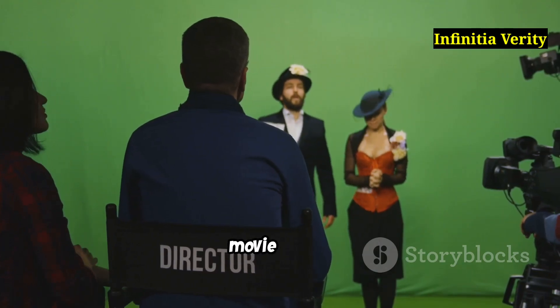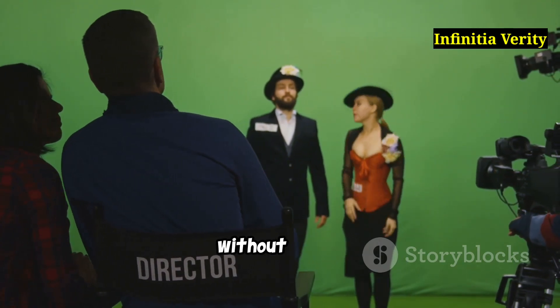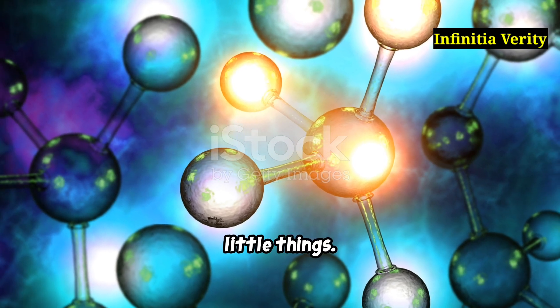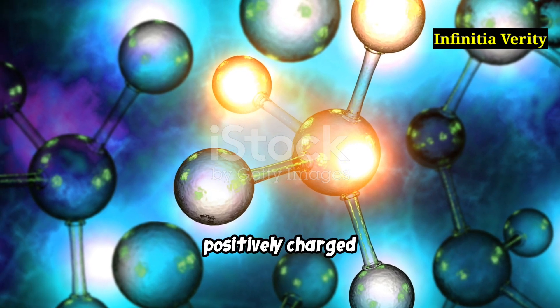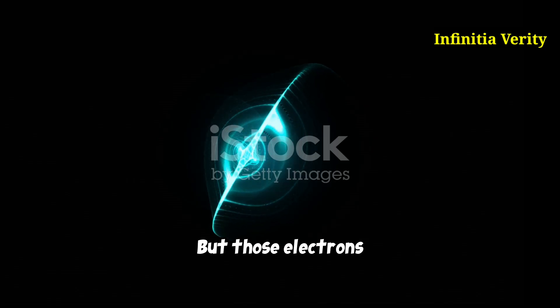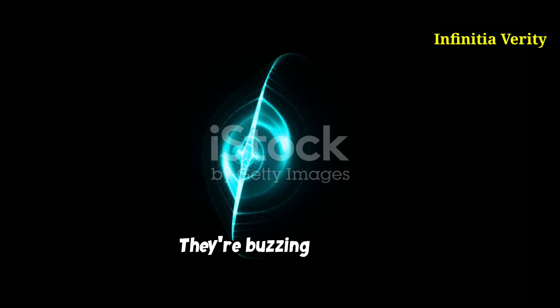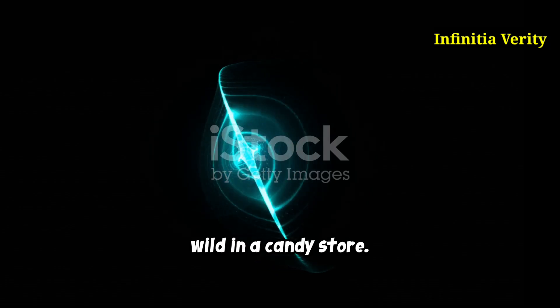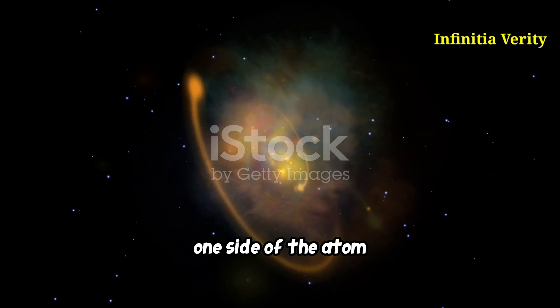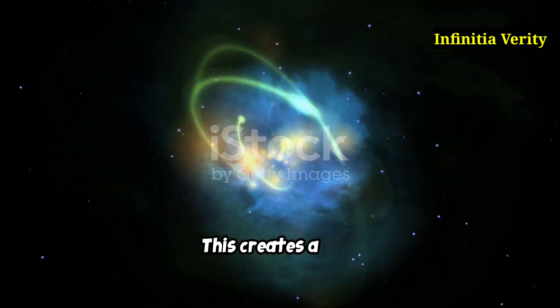They're like background characters in a movie - quiet, unnoticed, but without them the story falls apart. Atoms are weird little things. Each atom has a positively charged nucleus surrounded by negatively charged electrons. But those electrons aren't sitting still. They're buzzing around like kids running wild in a candy store. Sometimes, by pure chance, the electrons on one side of the atom are more crowded than the other. This creates a tiny, uneven charge, like the atom is leaning a little to one side.